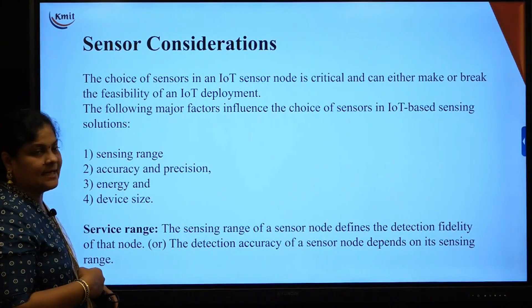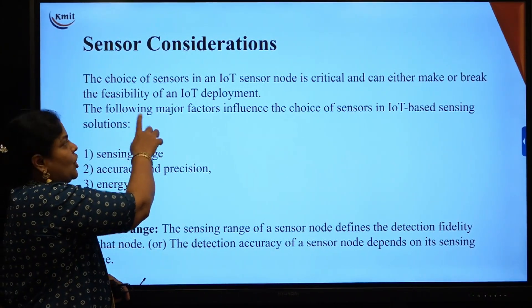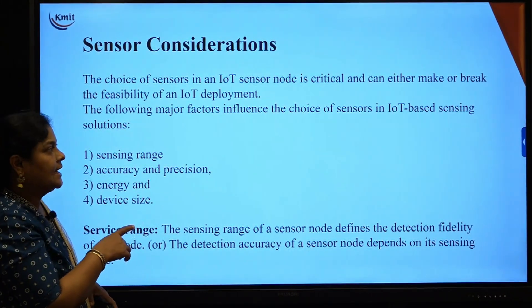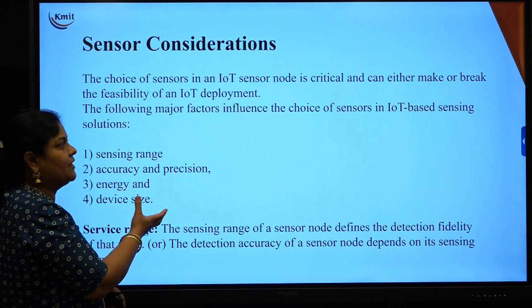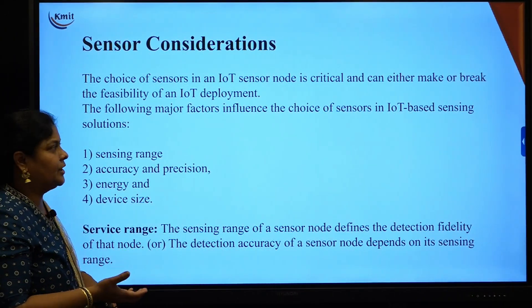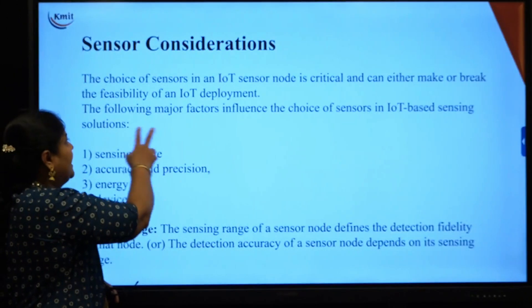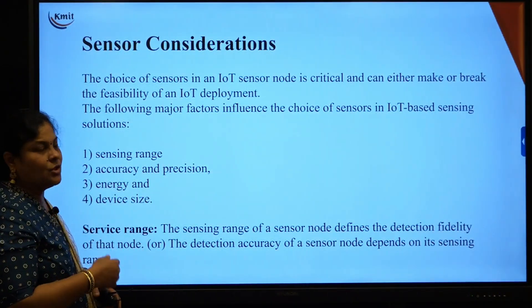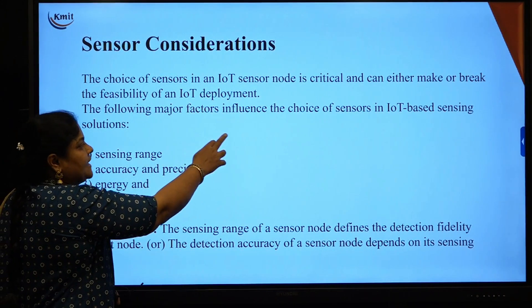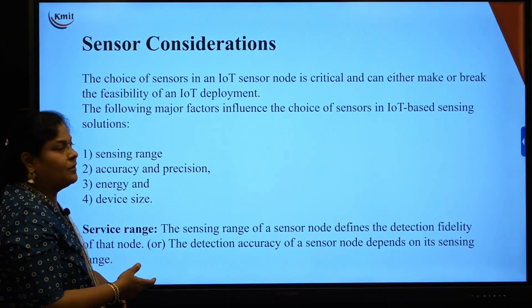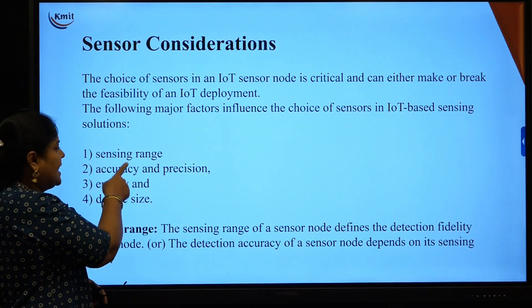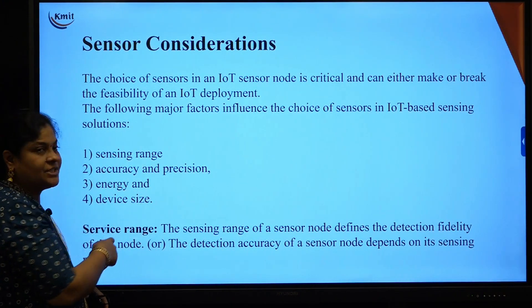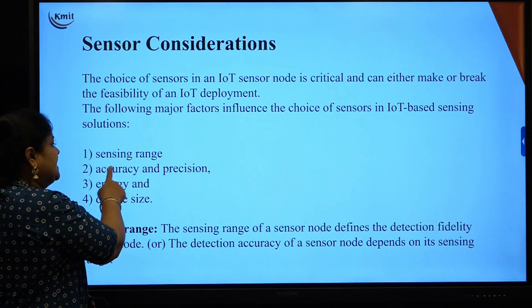The next topic is sensor considerations. The choice of sensor for an IoT sensor node is critical — whatever sensor we choose to develop an IoT deployment can either make or break the feasibility of that deployment. The major factors that influence the choice of sensors in IoT-based sensing solutions are: sensing range, accuracy and precision, energy, and device size.